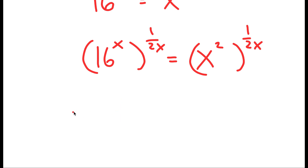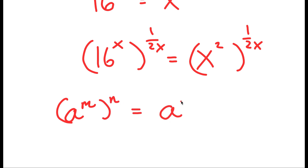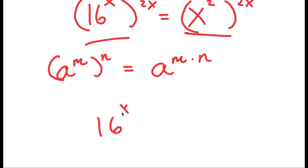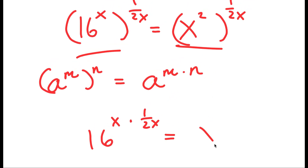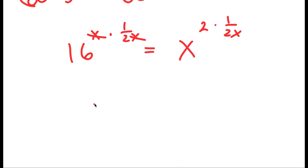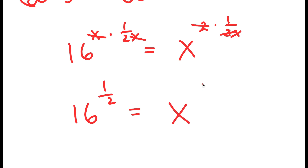Using the property that a to the power of m to the power of n equals a to the power of m times n, I apply this to both sides. On the left, x times 1 over 2x simplifies to 1 half, leaving 16 to the power of 1 half. On the right, 2 times 1 over 2x simplifies so the 2s cancel, leaving x to the power of 1 over x.